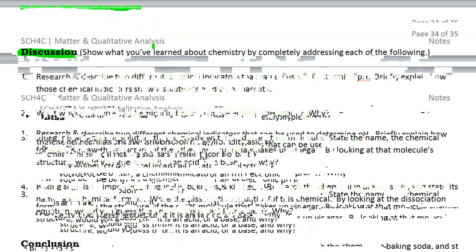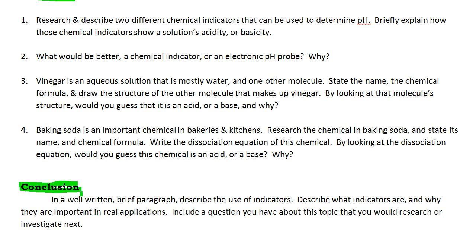The next thing is to include a discussion. A discussion is where you show me that you've understood chemistry. I'd ask you to answer the discussion questions in complete sentences or paragraphs, and if you borrow information from somewhere, give some references. Then a conclusion — a well-written paragraph, doesn't need to be long. Describe what indicators are and why they are important in real-life applications. Include a question you have about this topic that you would research or investigate next — those are usually called next steps.